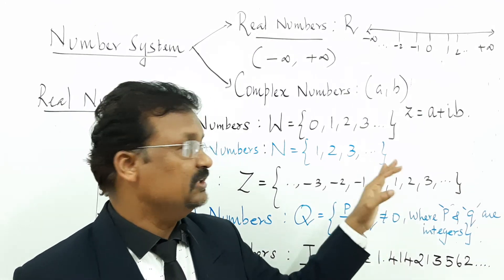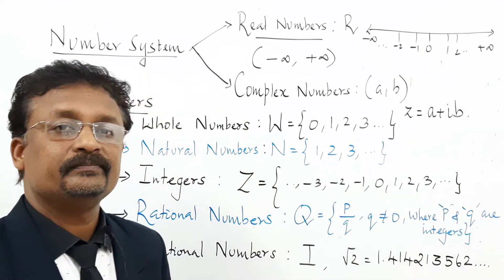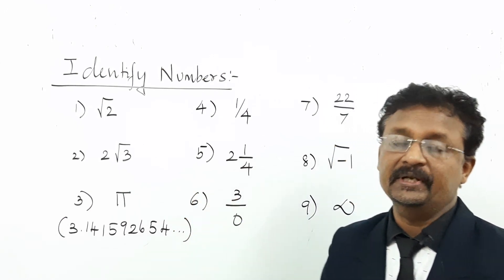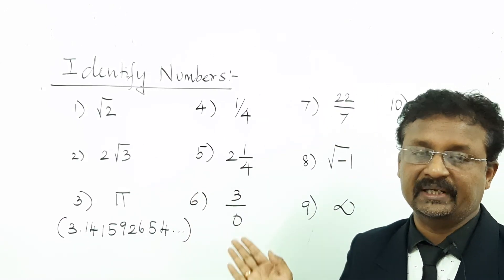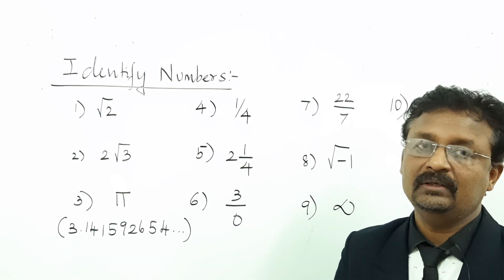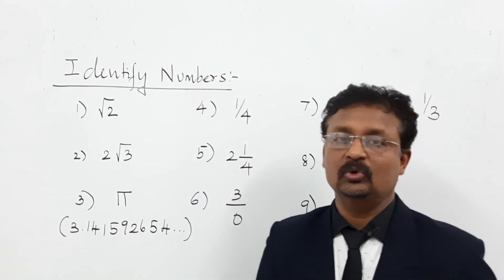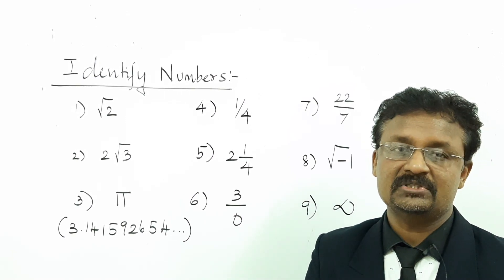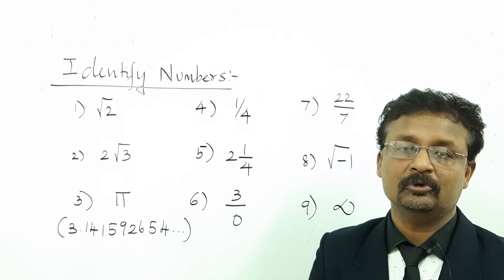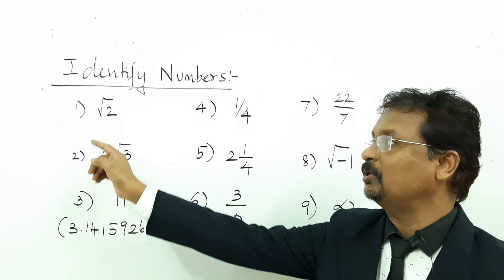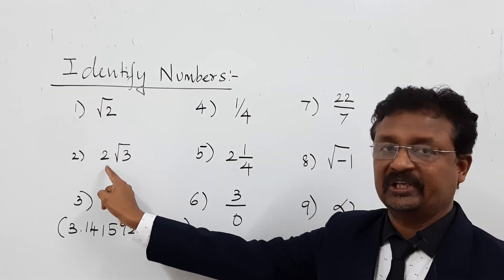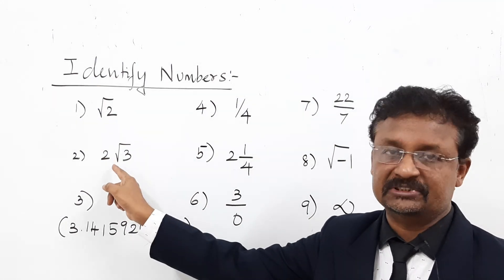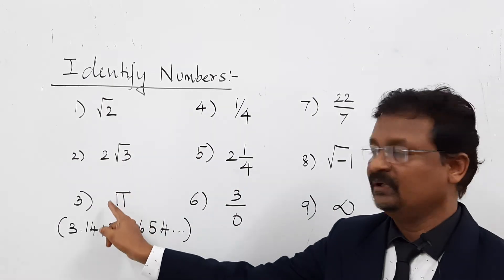Now I will give a good example set for this number system. I have quoted a set of 10 numbers — you have to identify the type of each number. First example: root 2 is an irrational number, since its value 1.414 is non-repeating and non-terminating. Second example: 2 times root 3 — since root 3 is already irrational, a number multiplied by an irrational number is another irrational number, so 2 times root 3 is irrational.